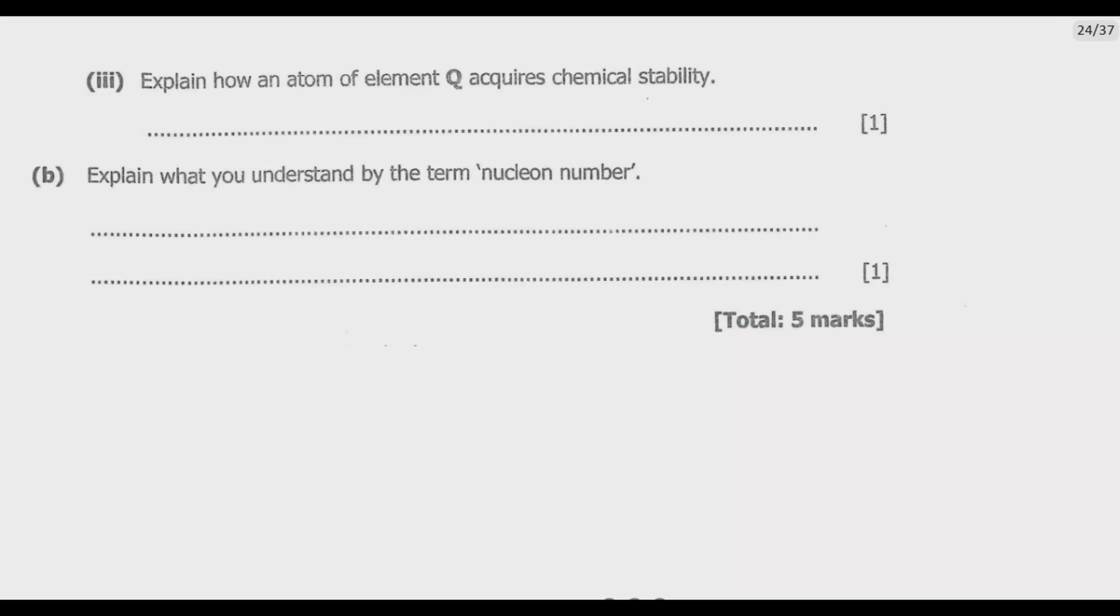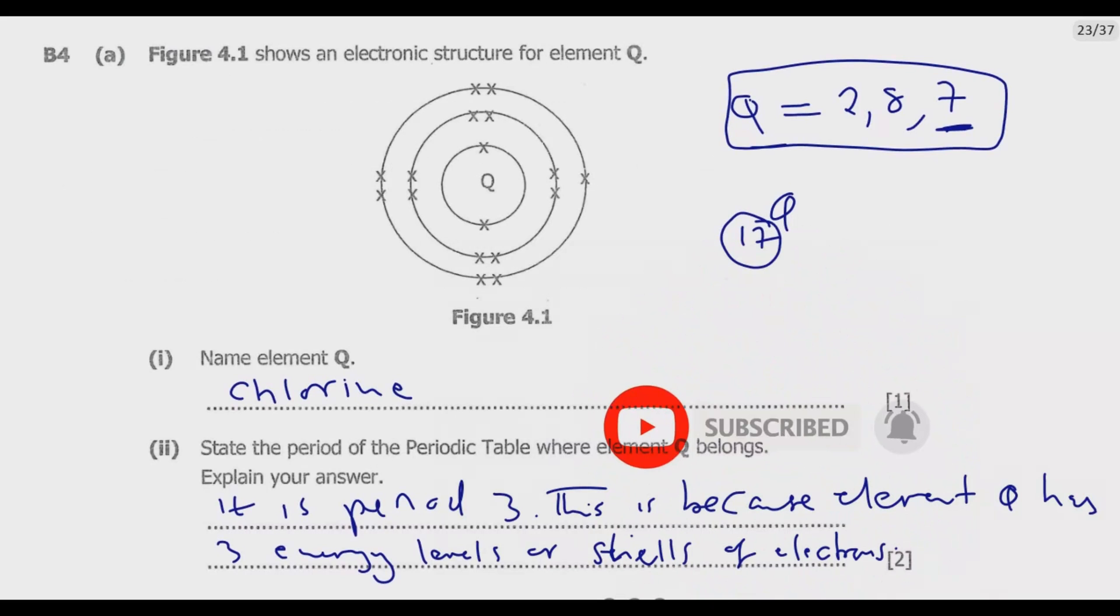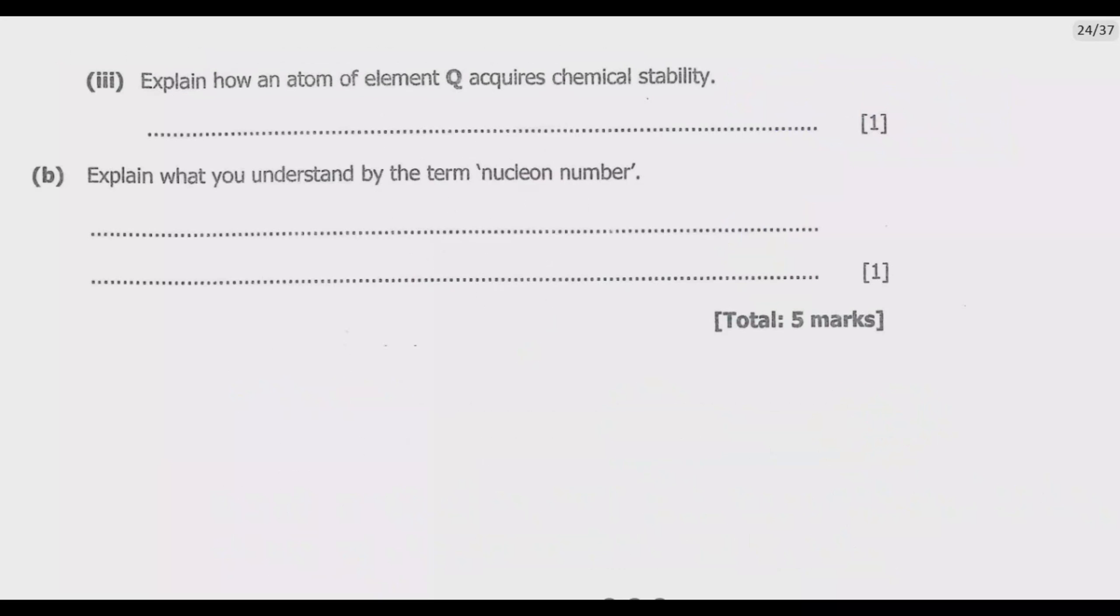Question 3: Explain how an atom of element Q acquires chemical stability. If you look at this element, it has 7 electrons in its outermost shell. To complete the outer shell, it will need to gain one electron or share with another element which will share another one, so that you have one full shell of electrons.